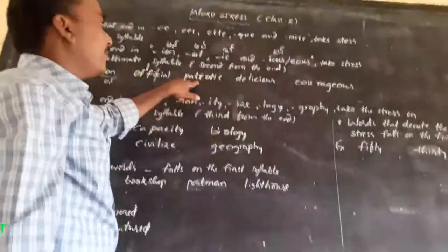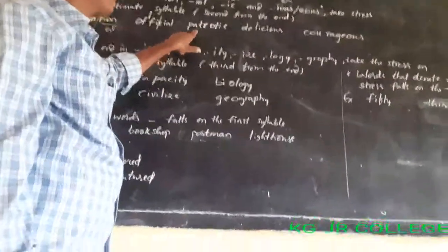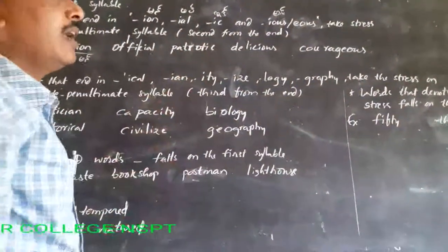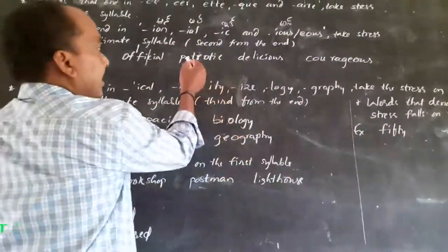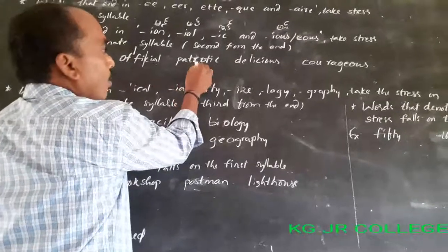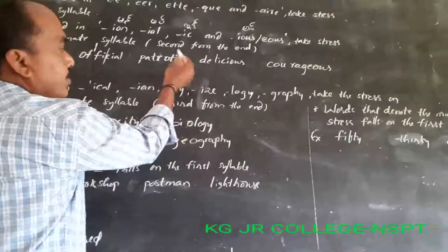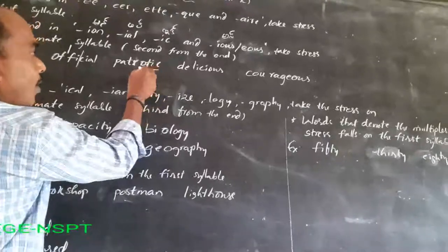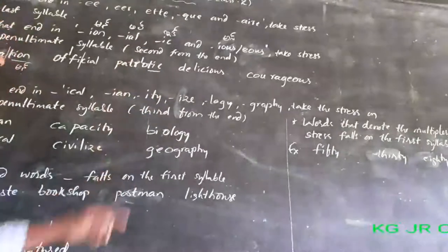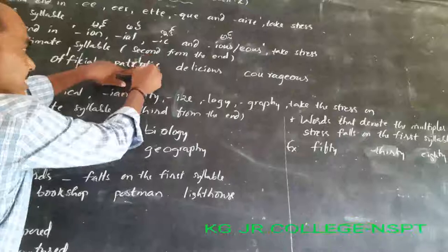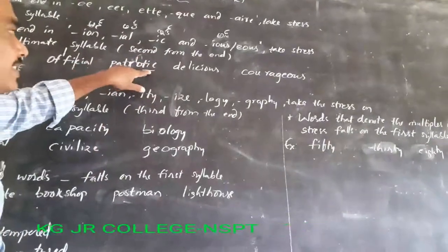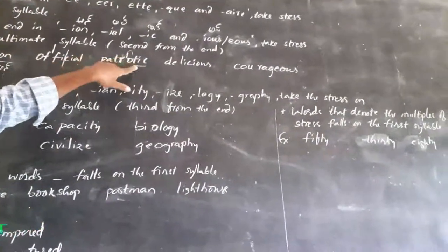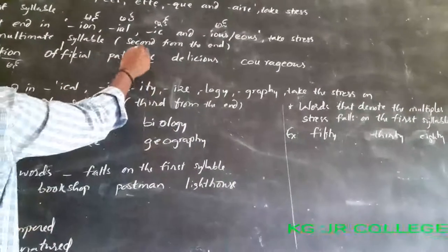Next: 'patriotic'. Pat-ri-ot-ic. Here, what is the last syllable? 'Tick' is the last syllable. 'O' is an individual syllable. So in 'patriotic', the stress is on '-ot': pat-ri-OT-ic.